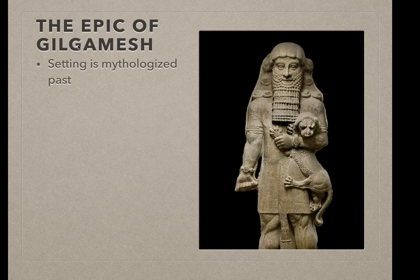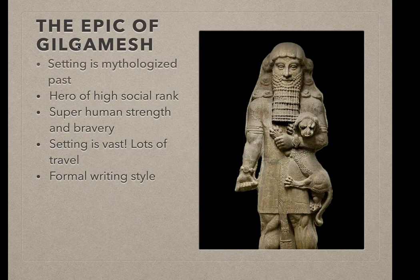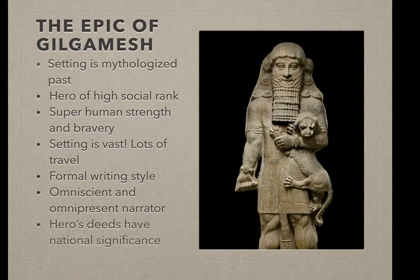For instance, the story is set in a mythologized distant past. The hero has high social rank and superhuman strength and bravery. The characters traverse vast settings, traveling through land, sea, etc. The style of writing is formal and exaggerated. The narrator is omnipresent and knows what is going on both on earth and in the realm of the gods. The hero's deeds have national or cultural significance — we see this from the very beginning, where Gilgamesh's people are crying out to the gods to make their king a better leader.